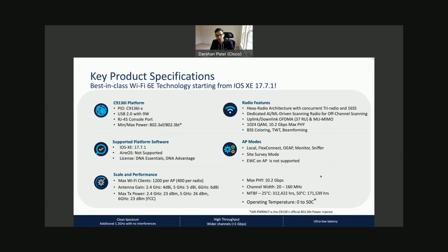The IOS XE version supported is 17.7 and onwards. Maximum transmission power: 2.4 GHz is 23 dBm, 5 GHz is 26 dBm, and 6 GHz is 23 dBm. For channel width — 80 MHz becomes the new normal for 6 GHz since there are 59 non-overlapping channels. If available channels are 40 and above, using 80 MHz is a no-brainer. We feel more confident recommending 40 MHz minimum, depending on the environment and end-client devices.